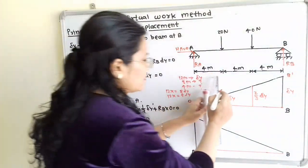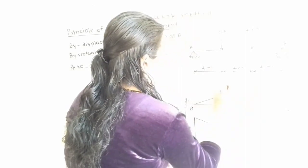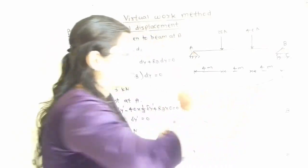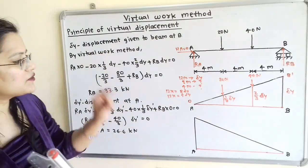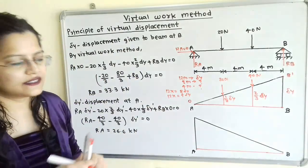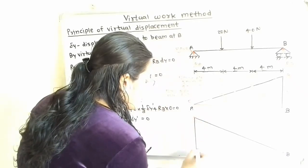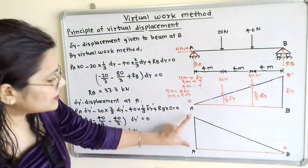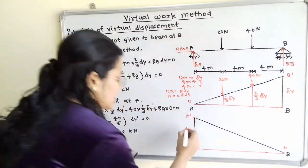We will show the 20 N force and the 40 N force acting in the downward direction. Now in the second case, we give displacement at end A, while at end B displacement is 0. At end A, the original position moves to a final position A dash, and this vertical displacement is written as delta Y dash.